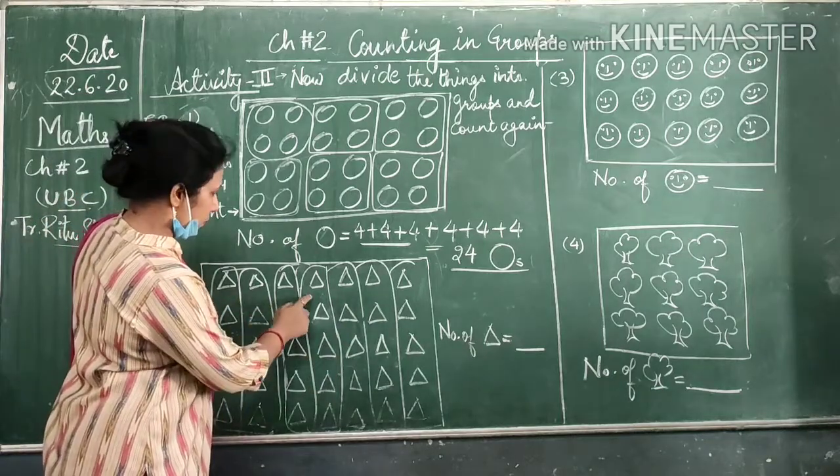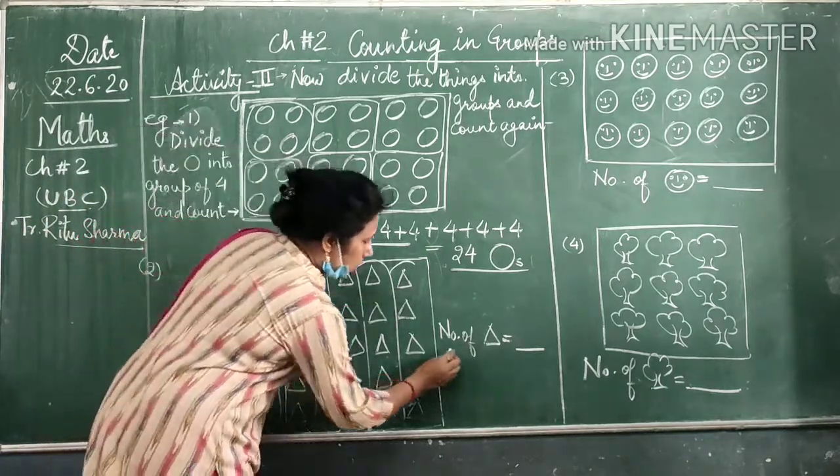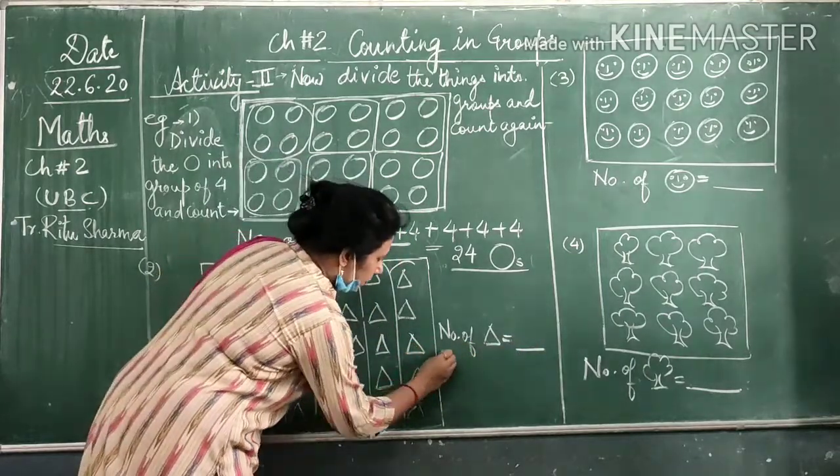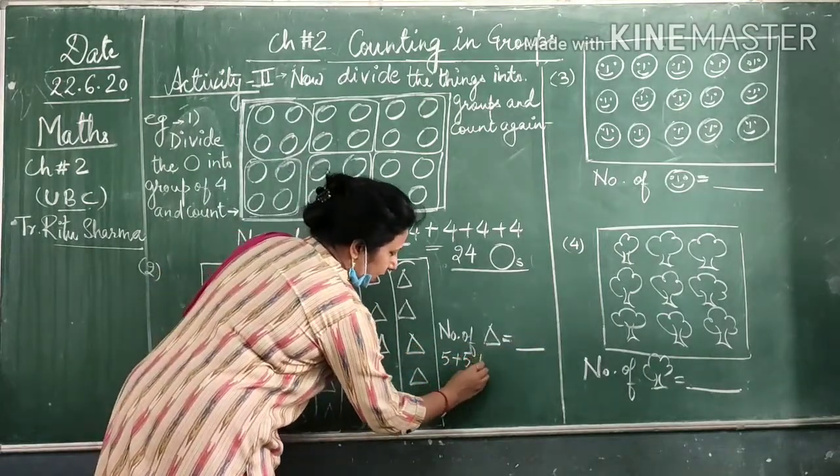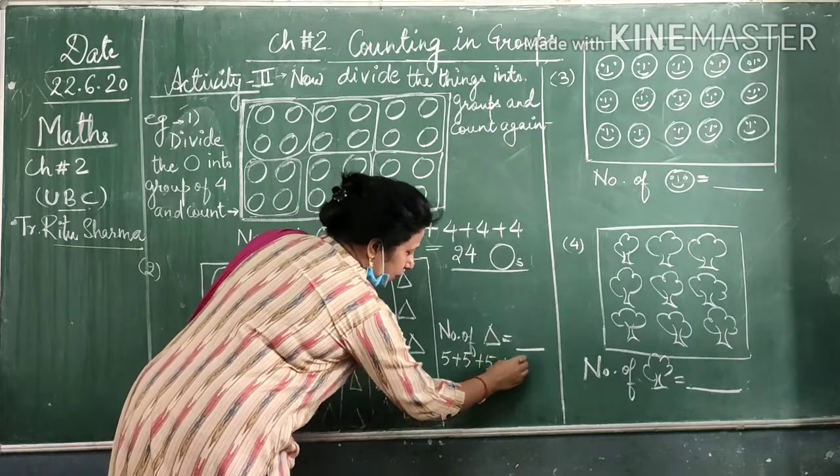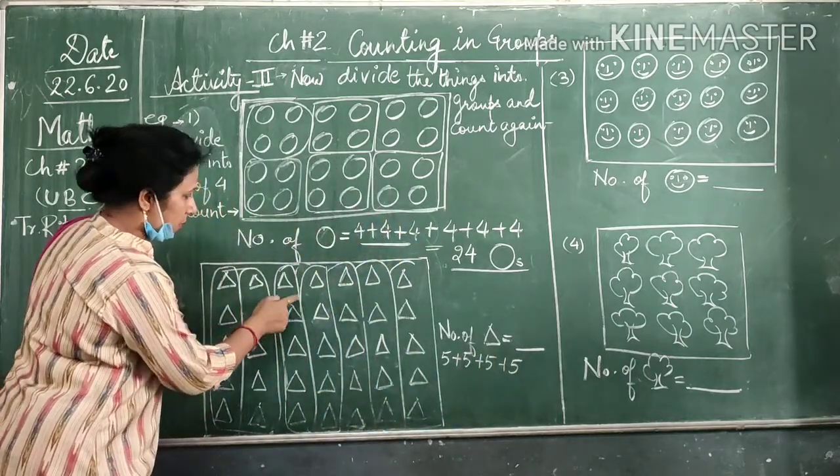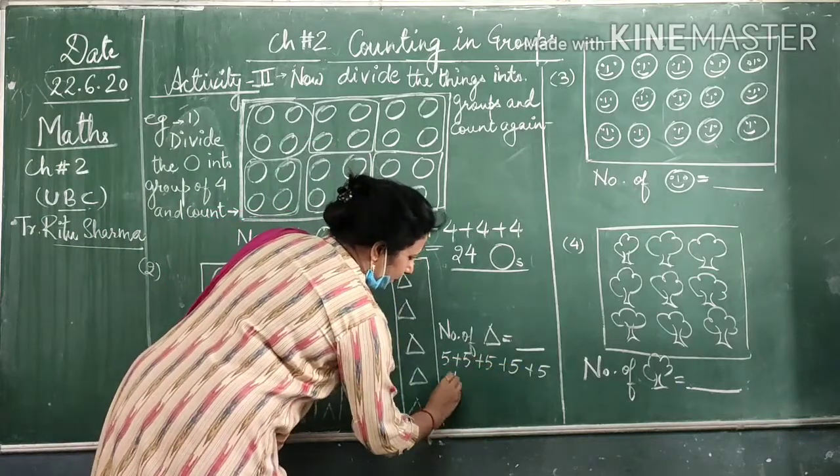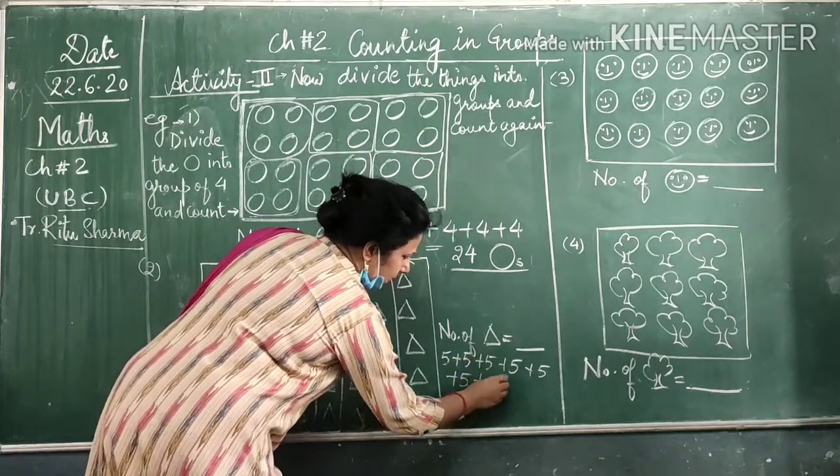Counting this, it will be 1, 2, 3, 4, 5, 6, 7 times. So number of triangles is equal to 5 plus 5 plus 5 plus 5, 1, 2, 3, 4, 5, 6, 7. So how many? 1, 2, 3, 4, 5, 6, 7 times.